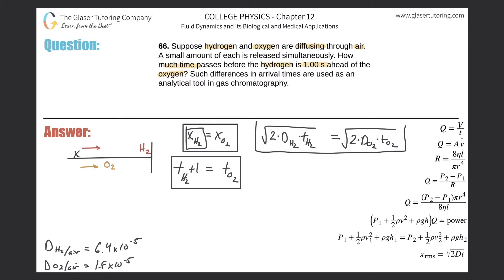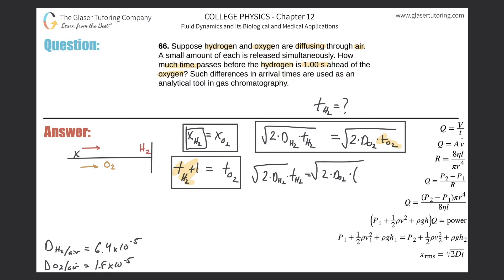Now I have two unknowns, but what they're really asking is to solve for t(H₂) — the time it takes hydrogen to reach this location. So I'll substitute t(O₂) = t(H₂) + 1 in for t(O₂). Now we get: √(2 · D(H₂) · t(H₂)) = √(2 · D(O₂) · (t(H₂) + 1)). I know all the diffusion coefficients and the constant one, so I have just one variable. Beautiful — now we can start solving.